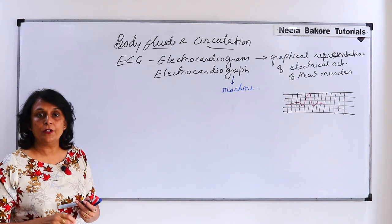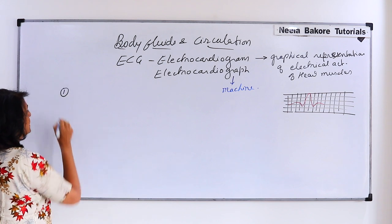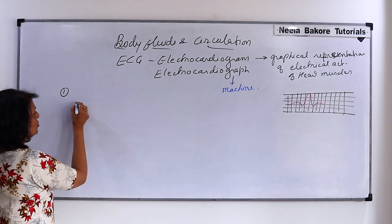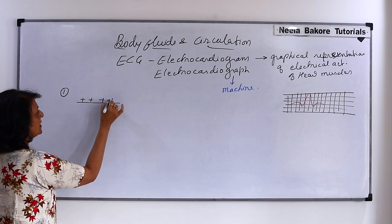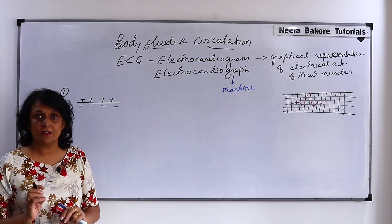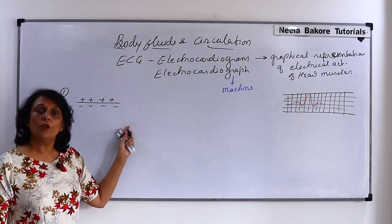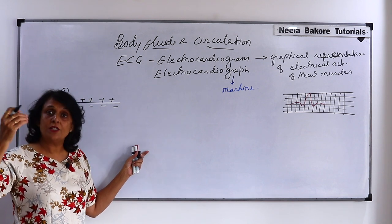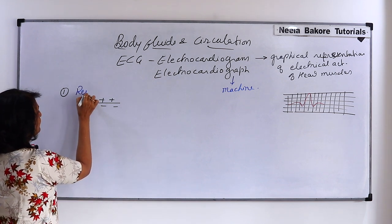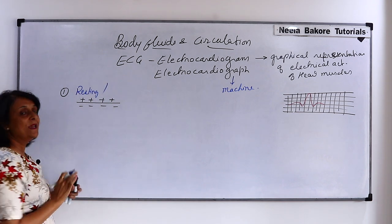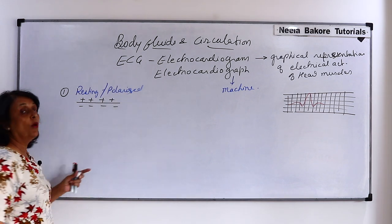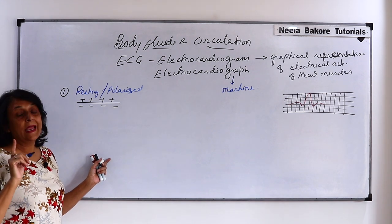There are two or three important terms we need to study. First of all, if our muscles are relaxed — in resting condition — then the outside of the muscle has a positive charge and the inside has a negative charge. We call this the resting muscle: outside electro-positive, inside electro-negative. Because opposite charges are on either side of the membrane, we call this state polarized. If the word 'polarized' is used, it means the muscle is resting.